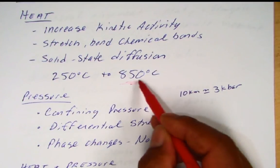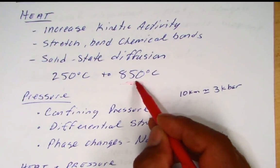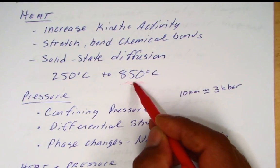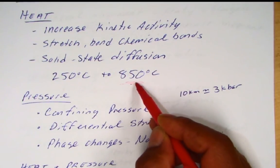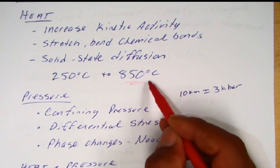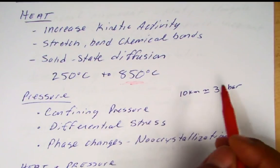Your book provides some temperature ranges: metamorphism occurs between 250 and about 850 degrees centigrade. Once you get above 850 degrees, you start melting — you'll certainly melt quartz, and you'll start melting some hornblendes or biotites, moving into mafic minerals and the realm of igneous rocks.